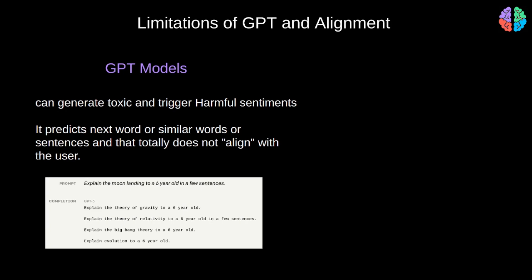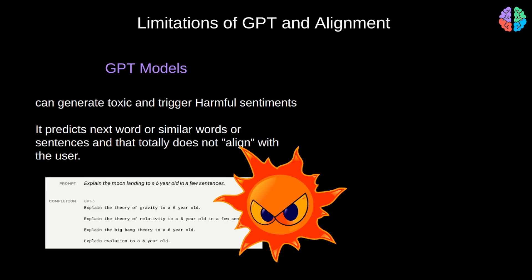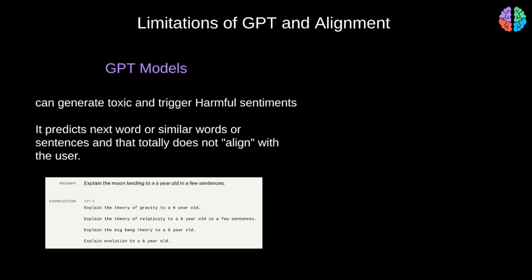As an example, take this simple question-answering task: asking GPT-3 to 'explain moon landing to a 10-year-old.' The response from GPT-3 is something like 'explain the theory of gravity to a 6-year-old, explain the theory of relativity to a 6-year-old' — it just cannot explain. It doesn't even understand what 'explain' means in this context. This is the alignment problem that ChatGPT solves.